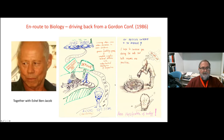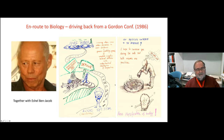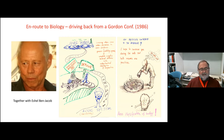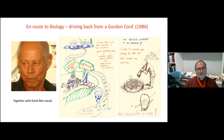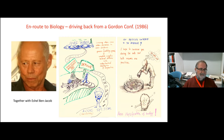During that period of time, there was a Gordon Conference in 1986, which was a coming together of all the people thinking about pattern formation. It was an opportunity for many of us to get together and try to understand to what extent what we were learning about non-living systems might be applicable to living systems. The person I did most of my thinking about that with was Eshel Ben Jacob.